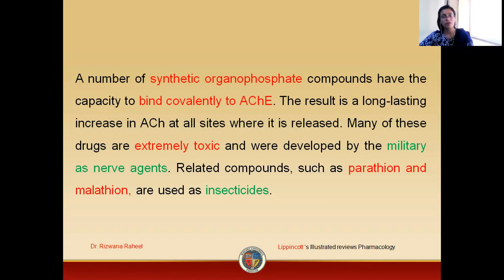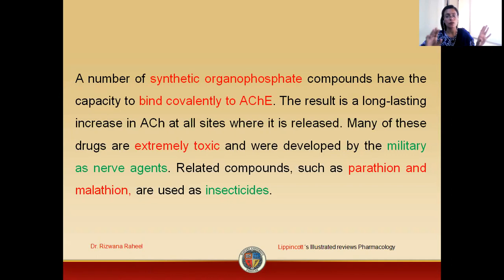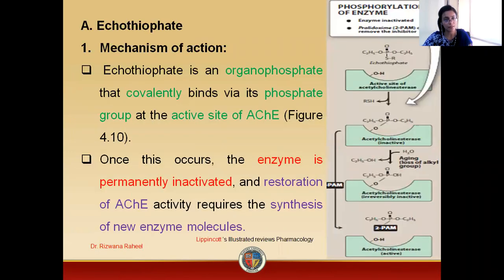These organophosphates are actually highly toxic. They were used in the military as nerve agents for interrupting the transmission between nerves. Related compounds such as parathion and malathion are two agents which are used as insecticides.